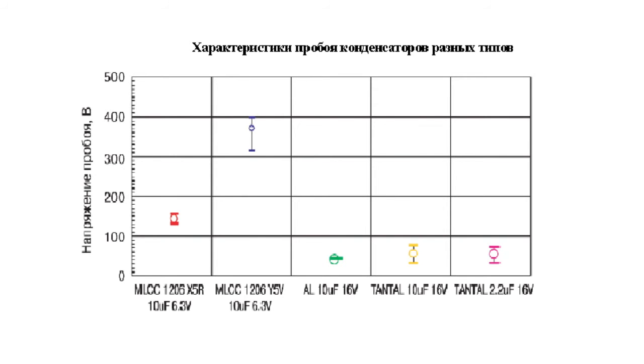Now, some words about the drawbacks of ceramic capacitors. With all their advantages, ceramic capacitors with large capacitance values use ferroelectric dielectric types, such as X7R, X5R, and Y5V. The dielectric permeability and capacitance of these types depend highly on temperature and the applied voltage.